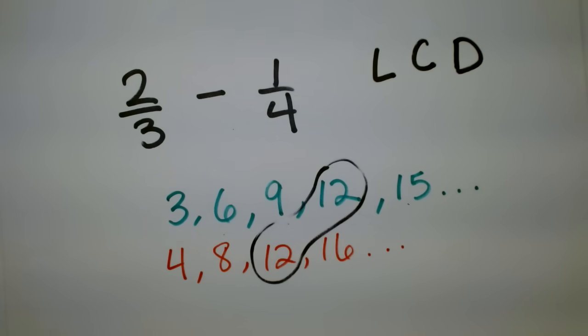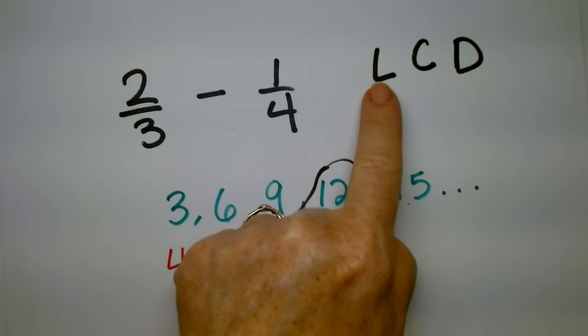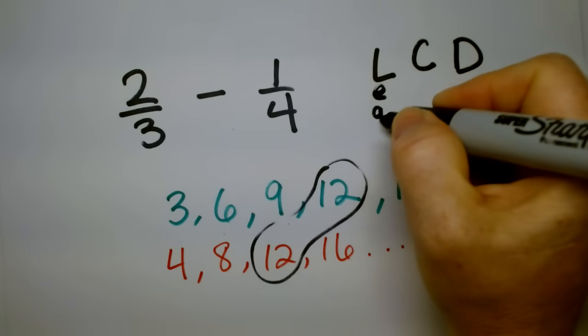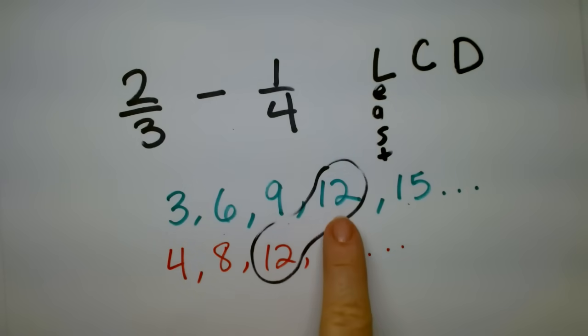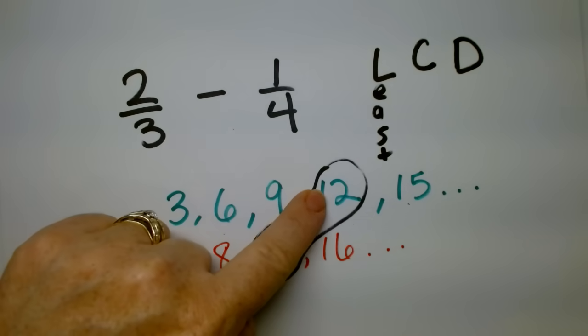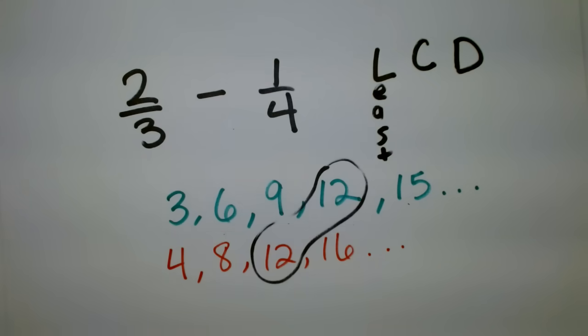So what does that mean? That means that the twelve is the smallest number. There are more out here. Actually, three eventually you get to a twenty-four, and four also has a twenty-four. But we're looking for the least one. L is for least. Least common denominator. So we're looking for the one that's common to both that is the smallest. So the first one that pops up. So three goes into twelve, four goes into twelve. That's what we want.